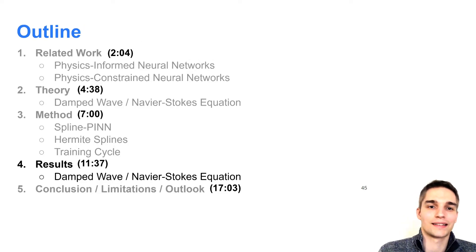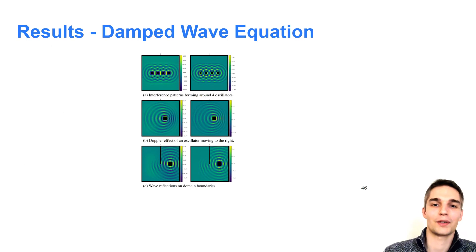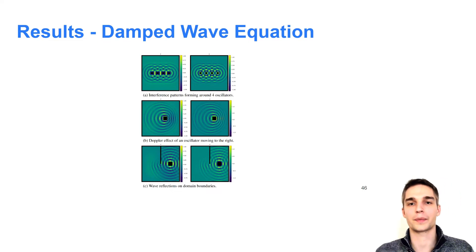Now, I will present our results. As you can see in this depiction, our spline-PIN model was able to learn several interesting effects for the damped wave equation, all without ground-truth data during training. In the top row, you can see interference patterns, which appear when multiple waves from different directions overlap. The Doppler effect, visible in the second row, shortens the wavelength of a moving oscillator in the direction of travel. In this case, the oscillator moves to the right, so the wavelength is shortened on the right side. This effect is well known, for example, from the change in pitch of ambulance cars passing by. In the bottom row, you can see reflections of the waves on the Dirichlet domain boundaries.